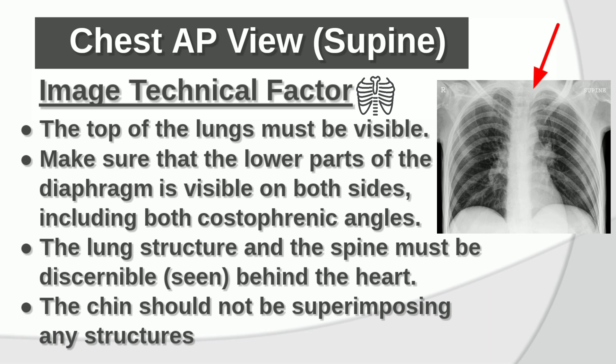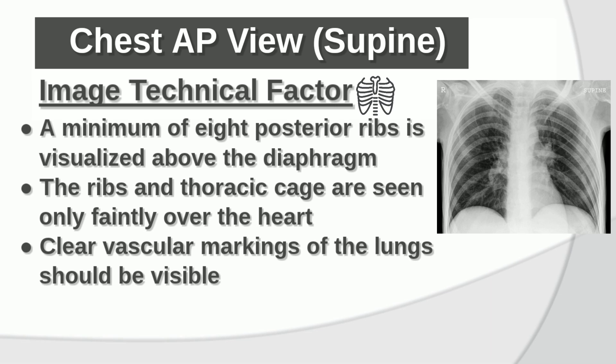Image technical factors: The top of the lungs must be visible. Make sure the lower parts of the diaphragm are visible on both sides, including both costophrenic angles. The lung structure and the spine must be seen behind the heart. The chin should not be superimposing any structures. A minimum of 8 posterior ribs are visualized above the diaphragm. The ribs and thoracic cage are seen only faintly over the heart. Clear vascular markings of the lungs should be visible.